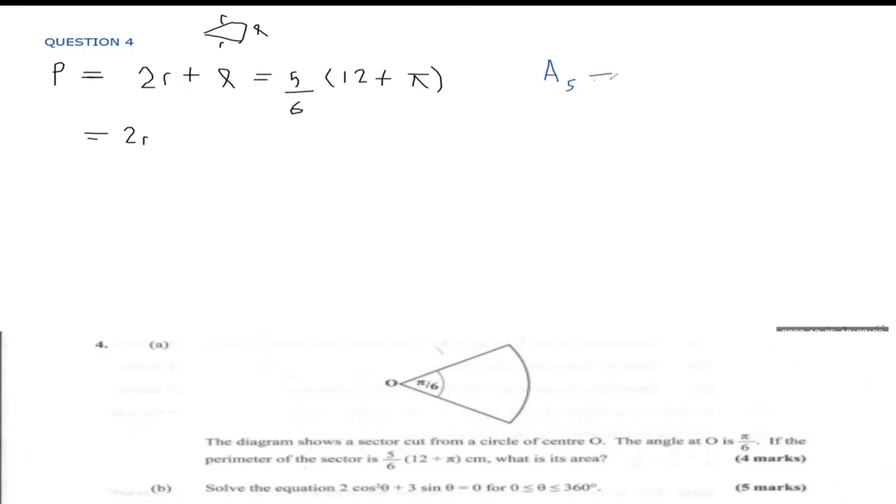Since the two expressions both contain the factor (12 plus π), comparing them gives r/6 equals 5/6, so the radius equals 5. Now that we have the radius, we can find the area of the sector using the formula: area equals θ over 2π times πr squared.